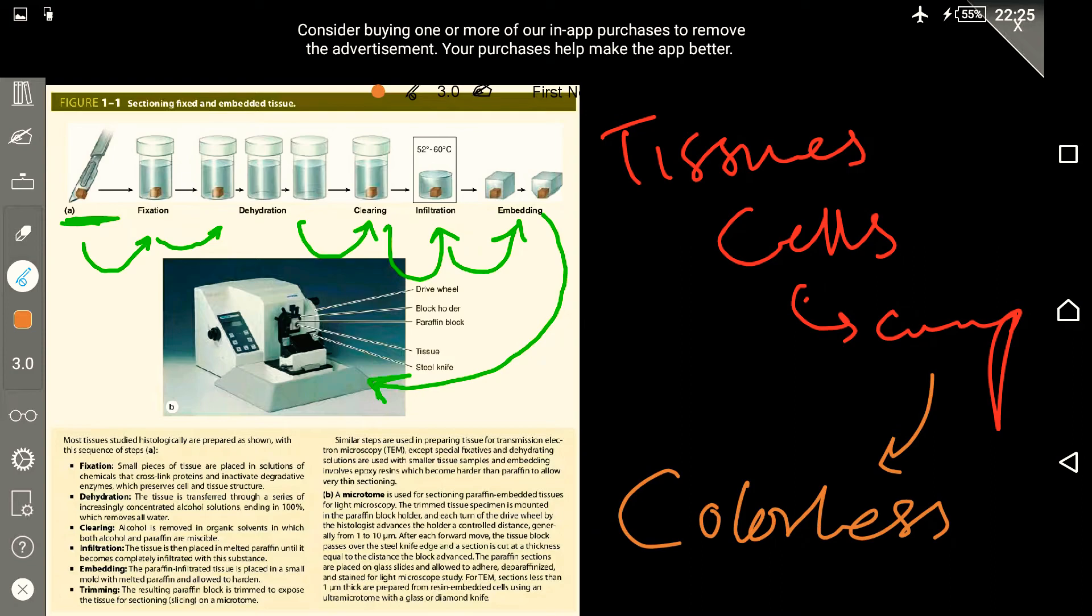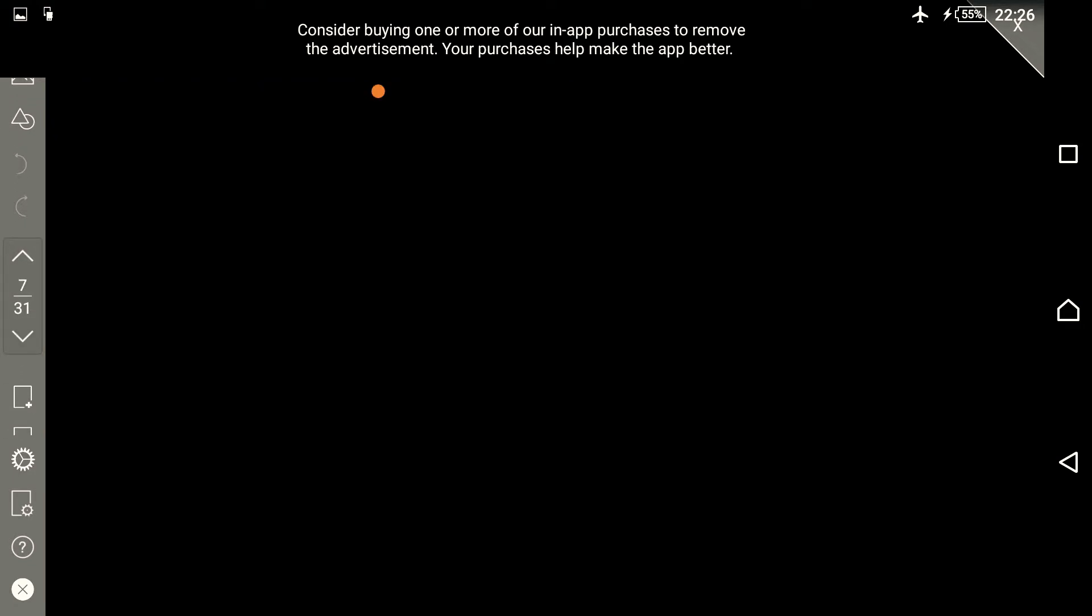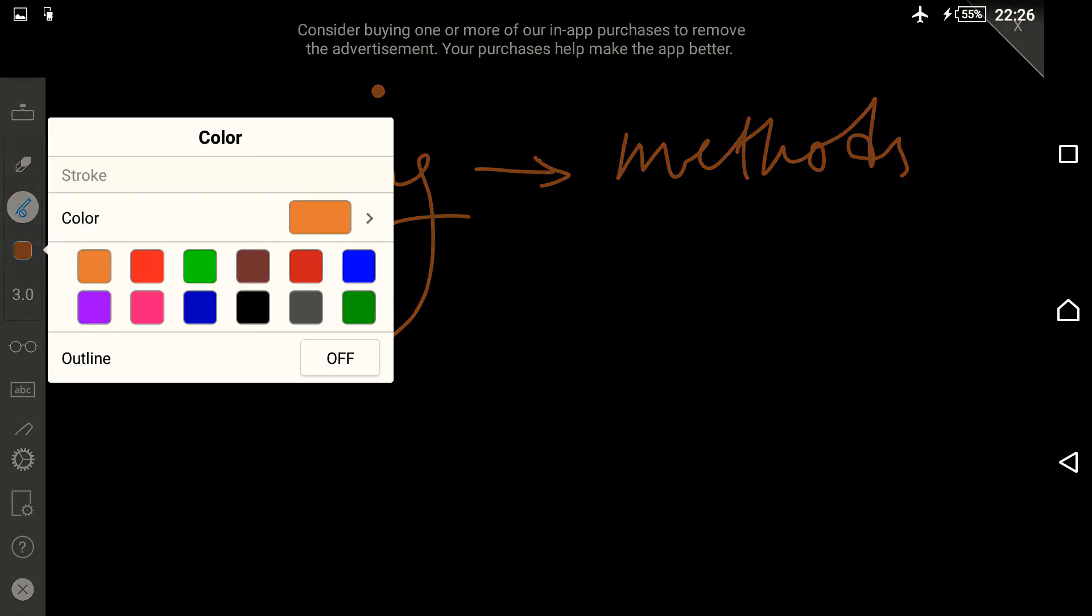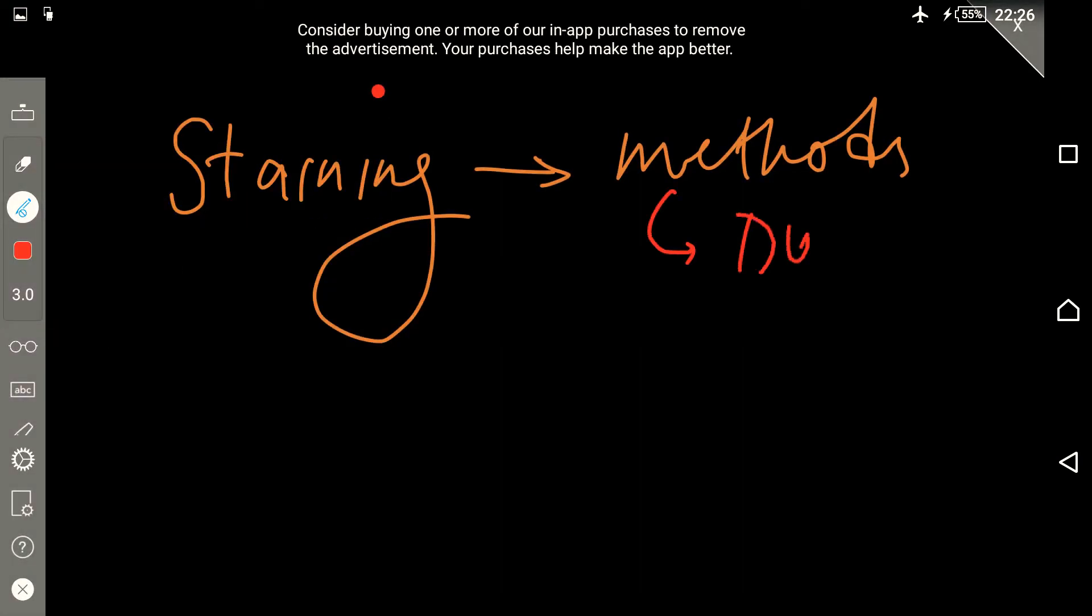We stain, we color, so that these structures get specific colors, each of them depending on their specific characteristics, specific molecules that they hold. Thus they can be studied properly. Staining is the next and hopefully the final method.